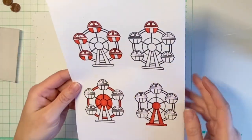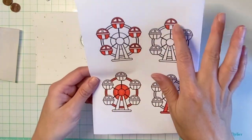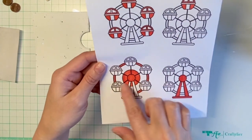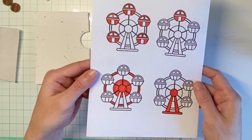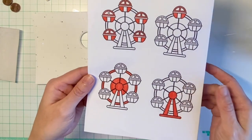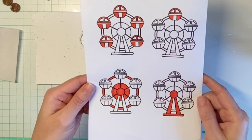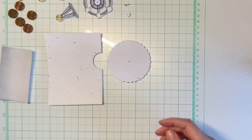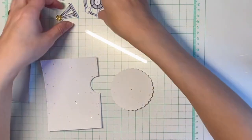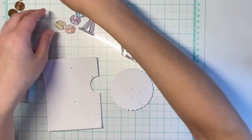For this technique we need the individual parts of the ferris wheel, so we need six gondolas, the wheel part, and the pole. If you're interested in the masking process, I will link to my other video, the first tutorial where I showed you the masking. I've prepared my ferris wheel images.